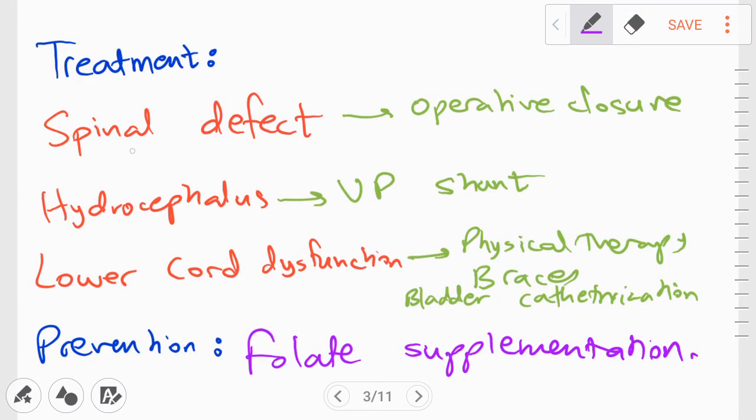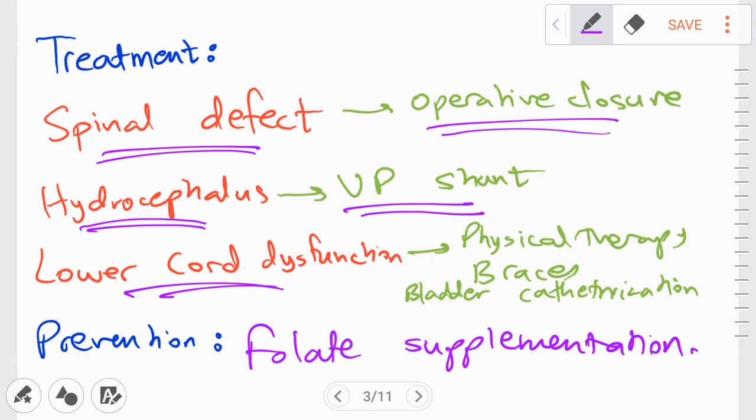The treatment of myelomeningocele involves treating the specific defects that are found in the disorder. First, to treat the spinal defect, we have to refer to operative closure. For hydrocephalus treatment, we have to perform a VP shunt. Remember that hydrocephalus is something which can be caused by Chiari 2 malformation. And as for the lower cord dysfunction, we use physical therapy, braces, and even intermittent bladder catheterization to help the patient.